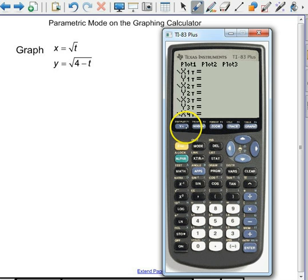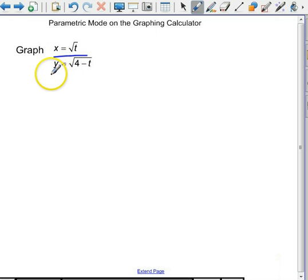And when I hit y equals, instead of y equals, I get an x1t and a y1t. It's not going to graph anything unless you have an equation for x in terms of t and y in terms of t.